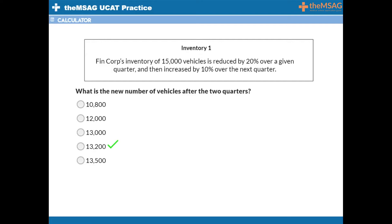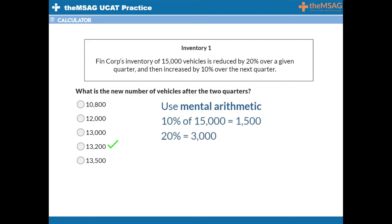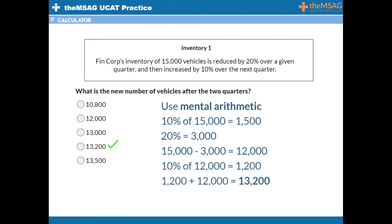The best way to answer this question quickly is to use mental arithmetic. 10% of 15,000 is 1,500, and 20% is simply twice this, or 3,000. Reducing 15,000 by 3,000 gives 12,000 vehicles at the end of the first quarter. Now we need to increase by 10% of this new number: 10% of 12,000 is 1,200. Adding 1,200 onto 12,000 gives 13,200. Try to save time in the test by doing simple calculations like this without the calculator.